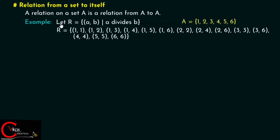Let's consider one example. Let R be the set of ordered pairs (a, b) where a divides b. This relation is defined on set A = {1, 2, 3, 4, 5, 6}. We first take A cross A, the Cartesian product of A with itself, and then choose all ordered pairs where the first element divides the second element.